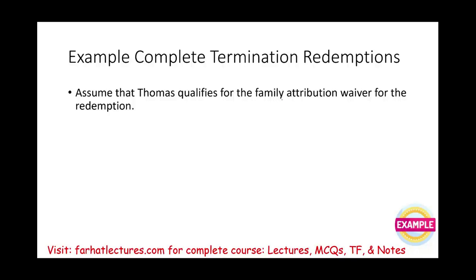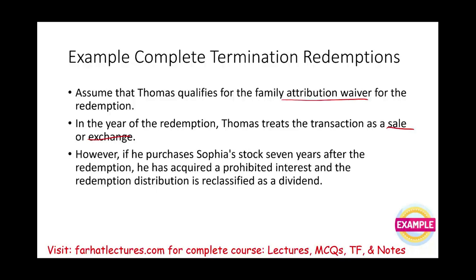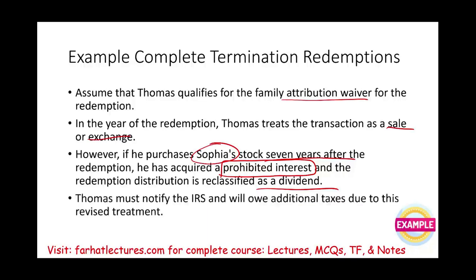Assuming Thomas qualifies for the family attribution waiver, in the year of redemption he treats the transaction as a sale or exchange. However, if he purchases Sophia's stock or acquires any interest in the next seven years after the redemption, he must notify the IRS that he acquired a prohibited interest. As a result, the original redemption is reclassified as a dividend, and Thomas will owe additional taxes.